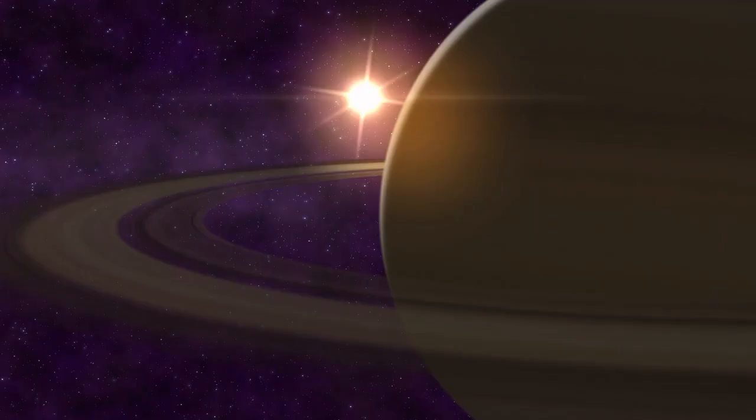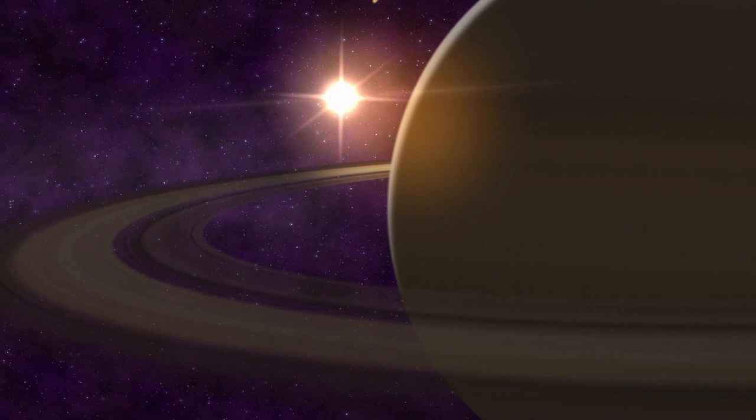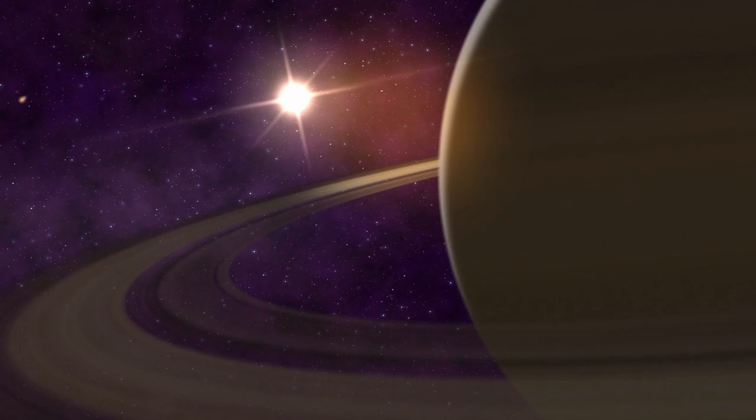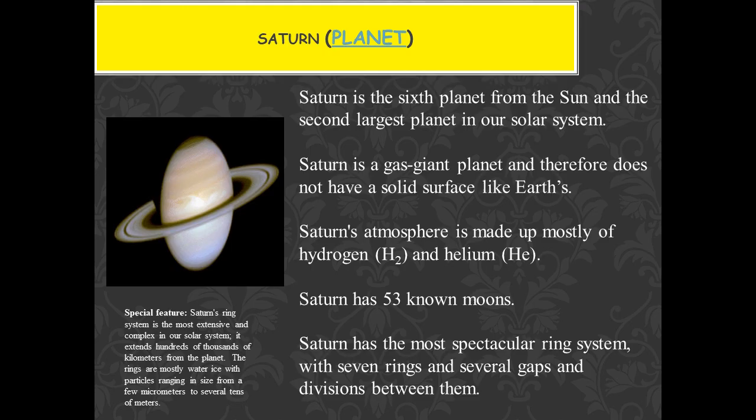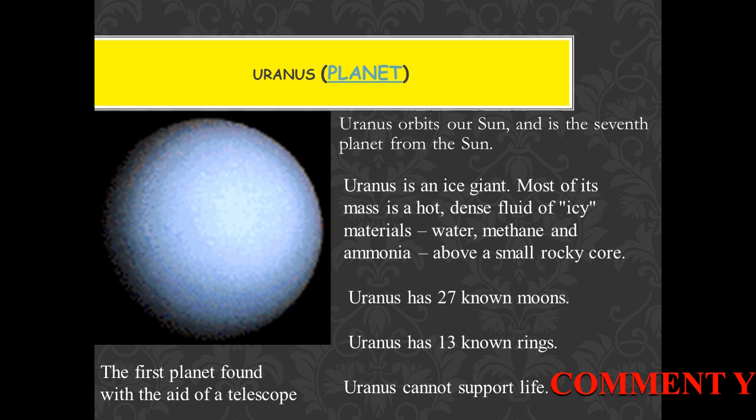Next we talk about Saturn. Saturn is the 6th planet and the second largest planet in our solar system. We get to see beautiful rings around it, which is why we call it the ringed planet. It has hydrogen and helium in its atmosphere, and there are around 53 discovered moons of Saturn.